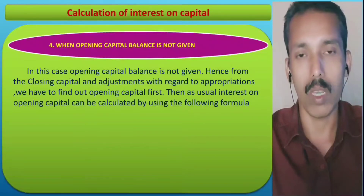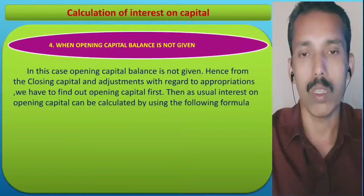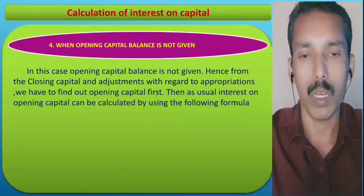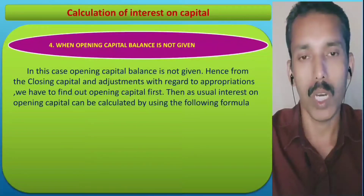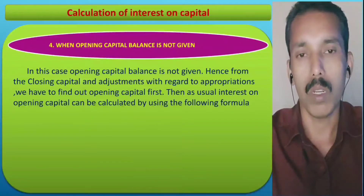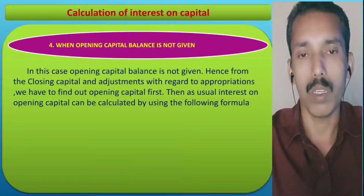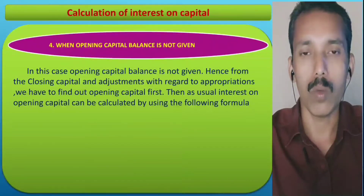From the closing capital, using partners' appropriation items, we are going to calculate the opening capital. Once we have the opening capital, we will calculate interest on capital using the equation: Interest on Capital = Opening Capital × Rate / 100 × 1 year.